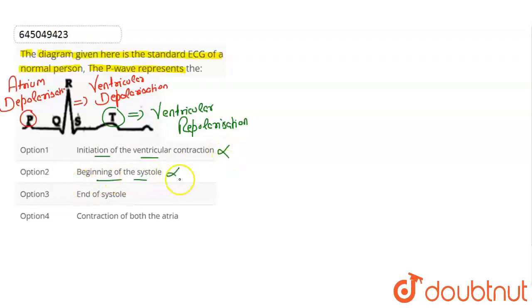Beginning of the systole. This also is wrong. End of systole is wrong. Atrium or ventricular? And end of systole is wrong.